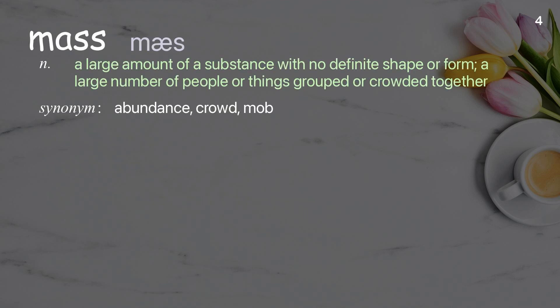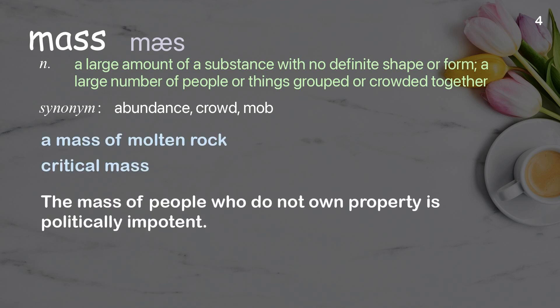Mass: a large amount of a substance with no definite shape or form; a large number of people or things grouped or crowded together. Examples: a mass of molten rock, critical mass. The mass of people who do not own property is politically impotent.